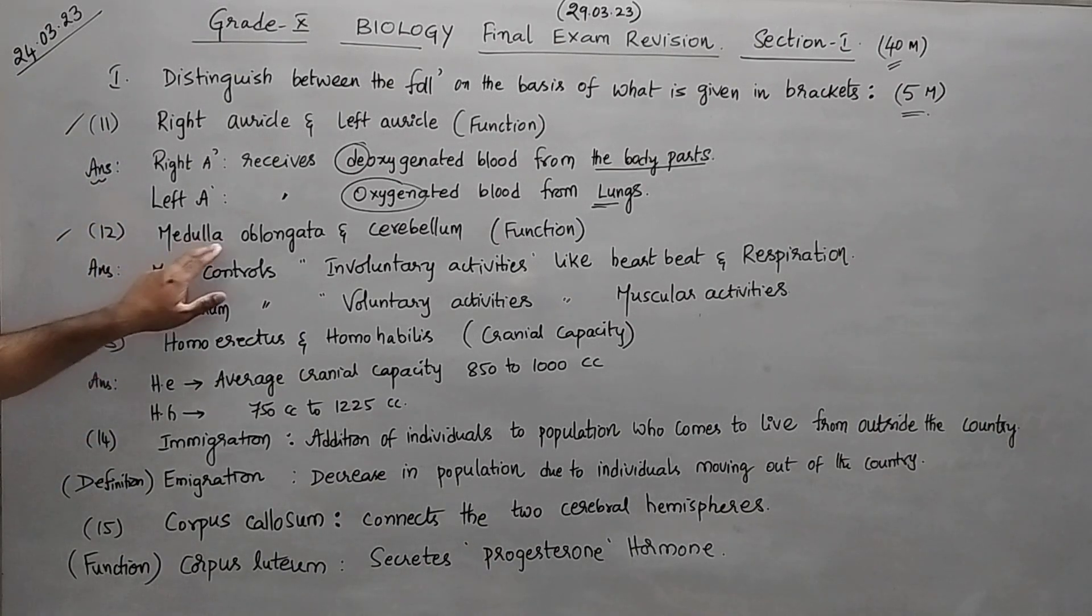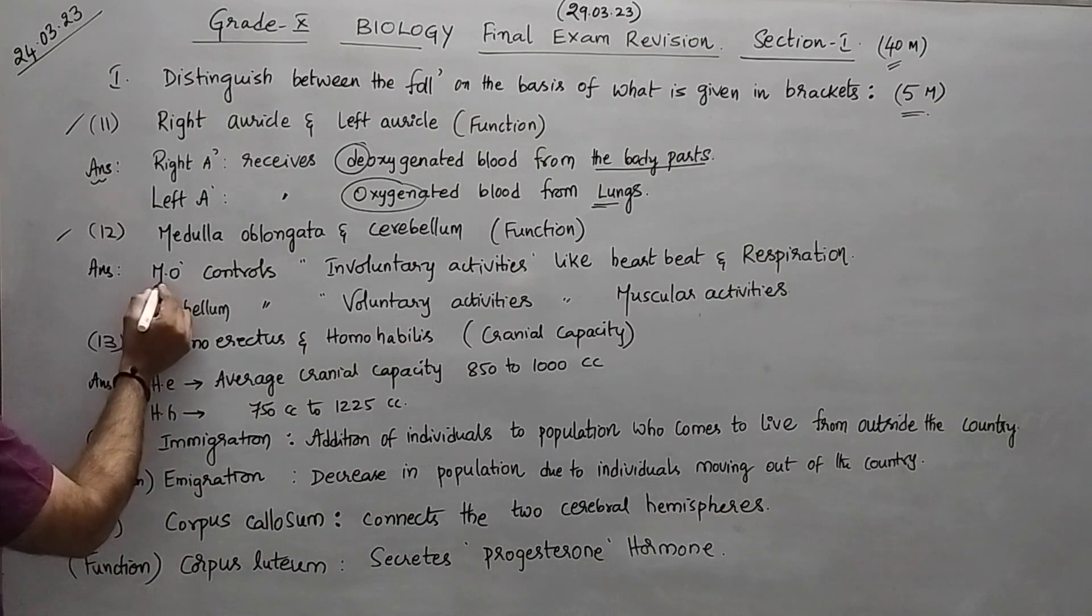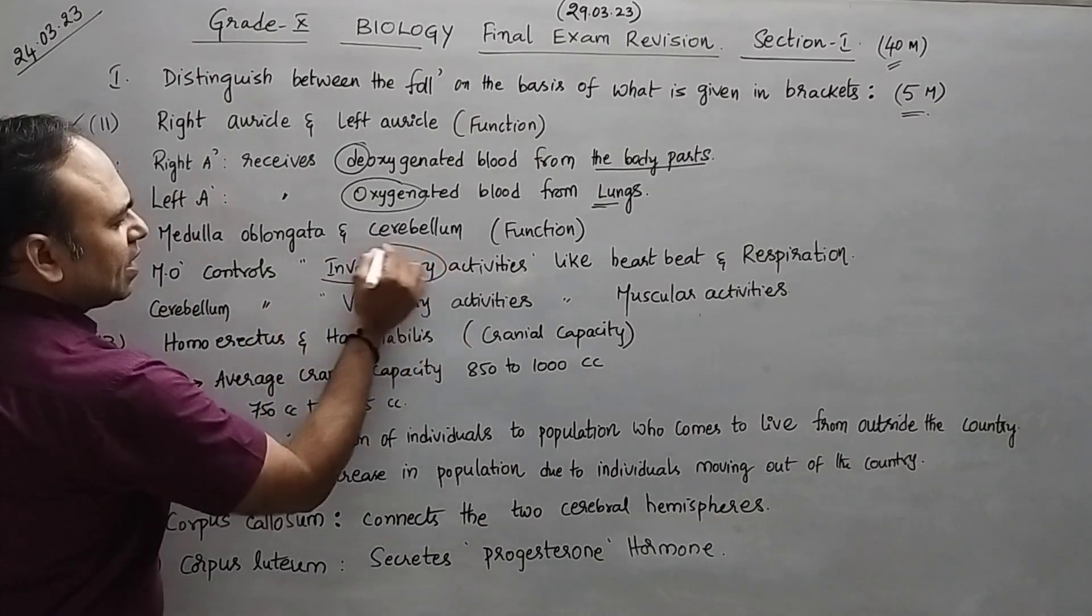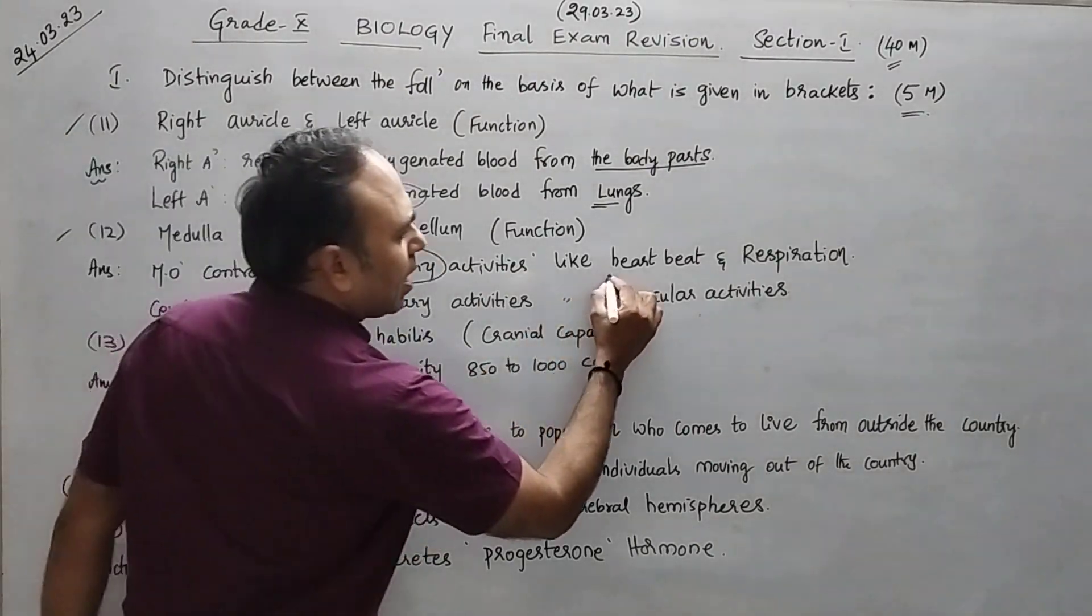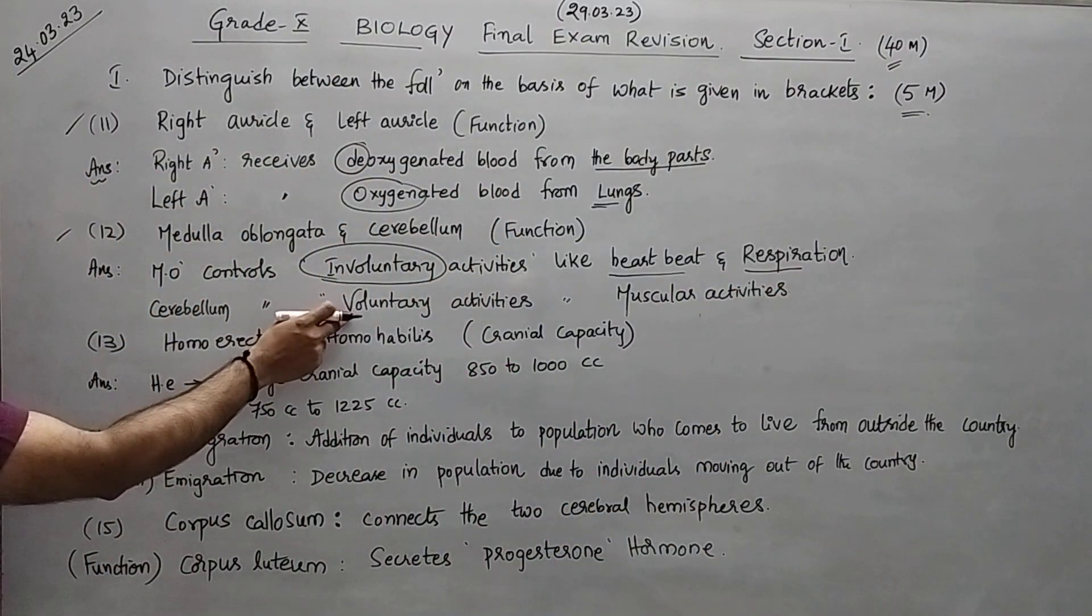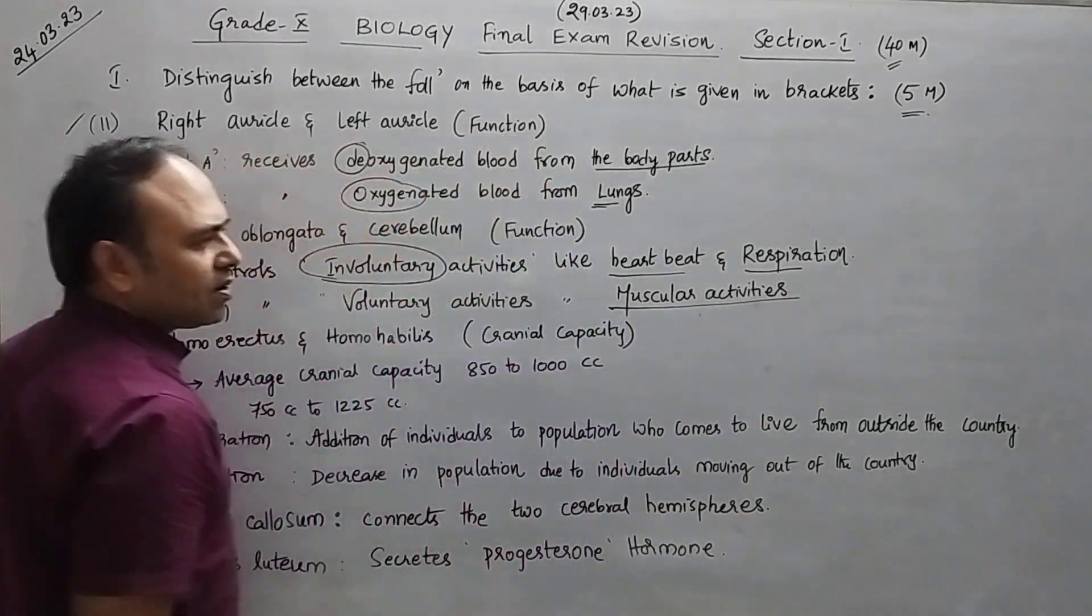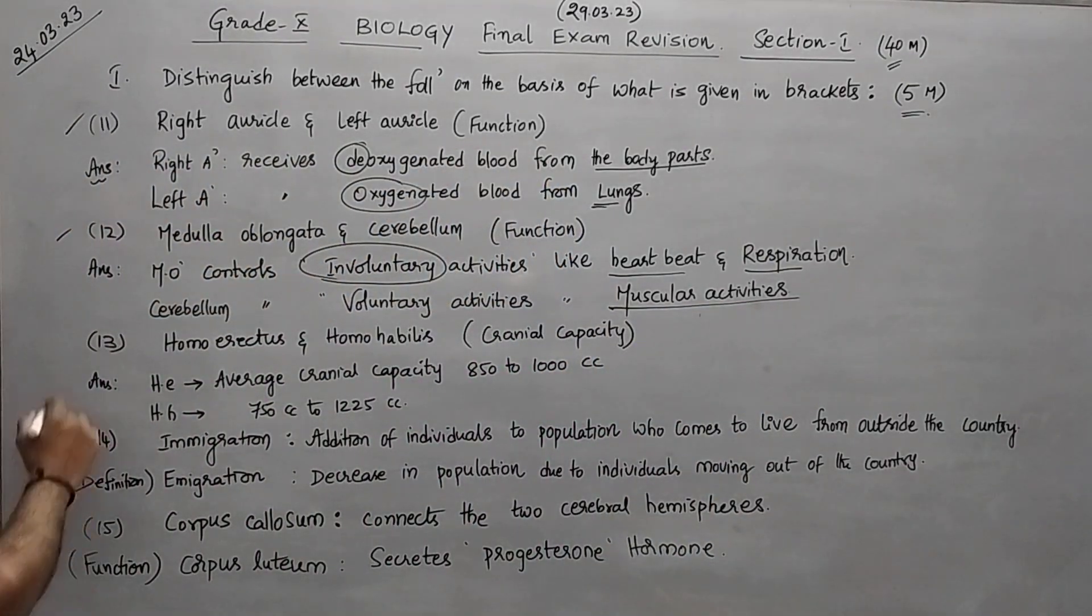Question number twelve, medulla oblongata and cerebellum - what is the difference in function? Medulla oblongata controls involuntary activities like heartbeat and respiration, but cerebellum has control capacity on the voluntary activities, nothing but the muscular movements, muscular activities.